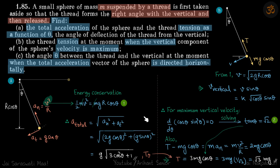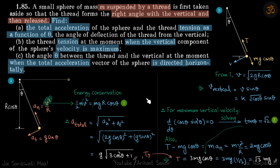Now for tension as a function of theta. On the ball there are two forces in the radial direction: tension inward and mg·cosθ outward. The centripetal acceleration is v²/r = 2g·cosθ. So: T − mg·cosθ = m·(v²/r) = 2mg·cosθ, which gives tension as a function of theta: T = 3mg·cosθ.